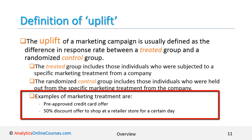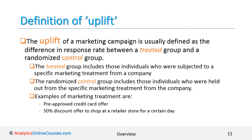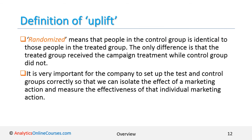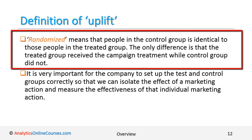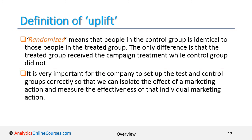Examples of marketing treatments include a pre-approved credit card offer or a 50% discount offer to shop at a specific retail store on a specific day. Randomized means the people in the control group are identical to those in the treated group. The only difference is that the treated group received the campaign treatment while the control group did not. It is very important for the company to set up the test and control group correctly so that we can isolate the effect of the marketing action and measure its effectiveness.